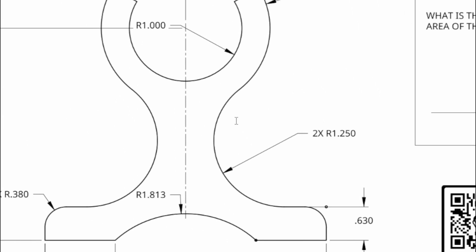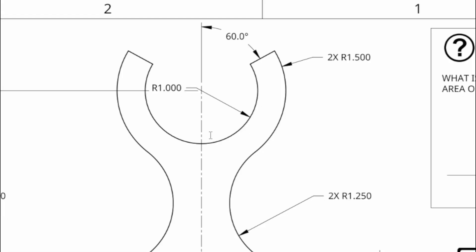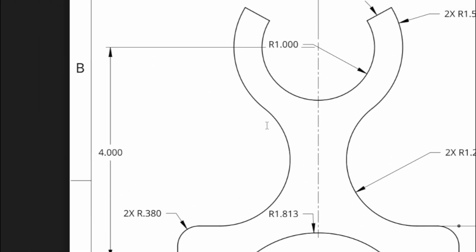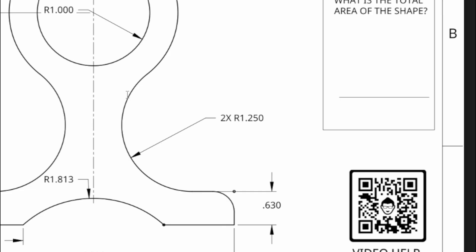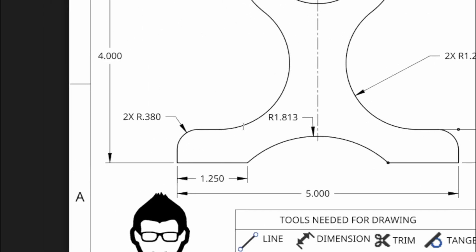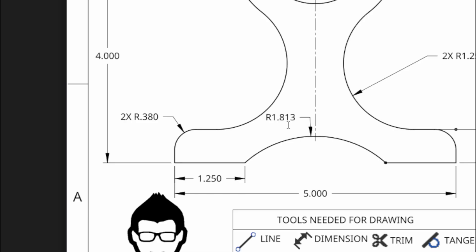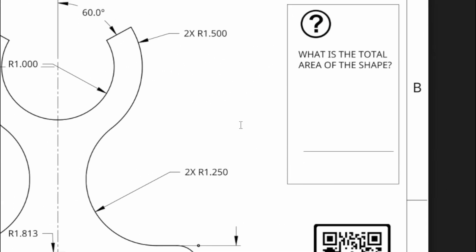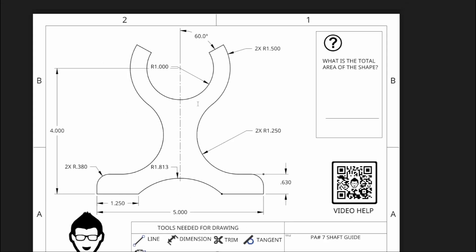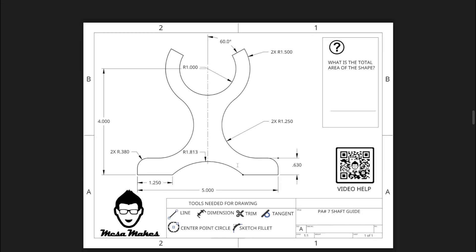This shape has a center line of symmetry going down the center. If you draw one half you can essentially mirror and fold it over to the other side. However, some dimensions reference the other side, so some approaches might work and some might not. The question we need to answer by the end is: what is the total area of the shape?